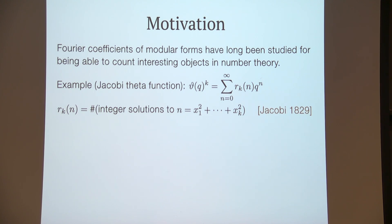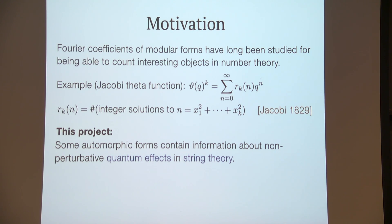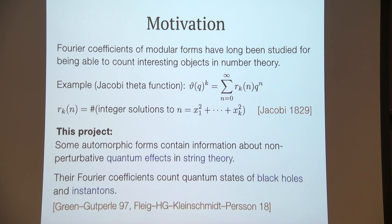This project is motivated by the fact that some automorphic forms contain information about so-called non-perturbative quantum effects in string theory, and their Fourier coefficients count, for example, quantum states of black holes and so-called instantons. This was first discovered by Green and Gutperle in 1997, and this work and subsequent work is reviewed, for example, in our book from 2018.